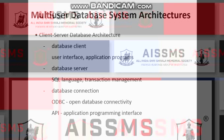The client-server database architecture broadly consists of two parts. The database client runs with a user interface and application programs — the user interface being the application program interface, where users can develop their own applications and interface with internal features. The database server runs specialized SQL language and handles transaction management. All requests made by the client are sent to the database server, where the SQL evaluation engine evaluates those queries and performs the transactions. Finally, database connectivity is achieved through Open Database Connectivity, ODBC, and the application program interface.